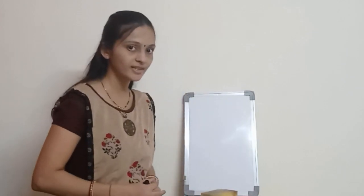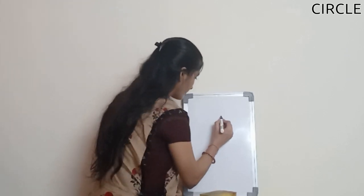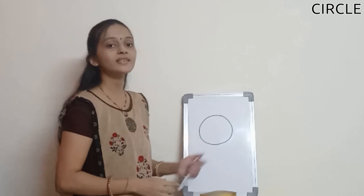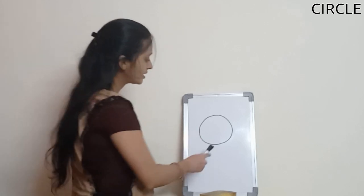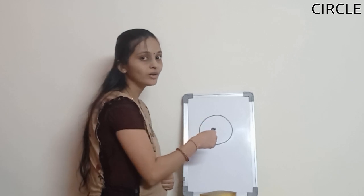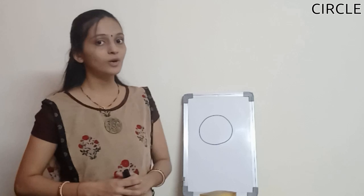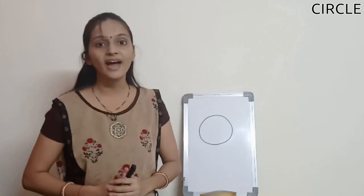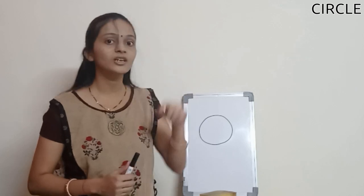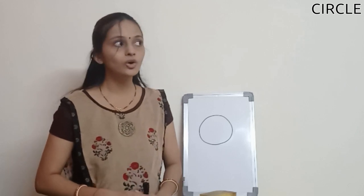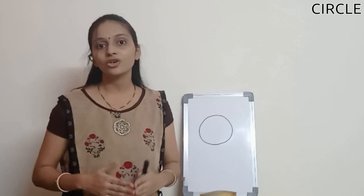Now our next shape is a circle shape. Let me draw on the board. Kids, this is a circle shape. As you can see, this shape has only one side — round and round and round. If you can recollect some of the objects that are of circle shape, the sun in the sky that we see in the daytime is of a circle shape. Even the moon at night on a full moon day we can see as a circle shape. Even watches on our hand that we wear are also of a circle shape.